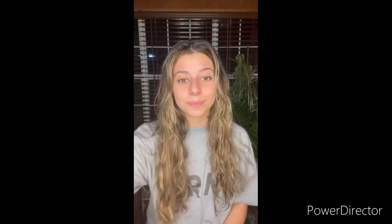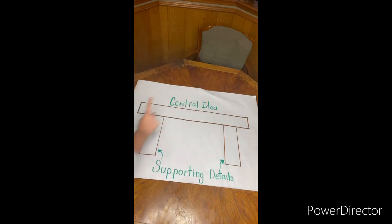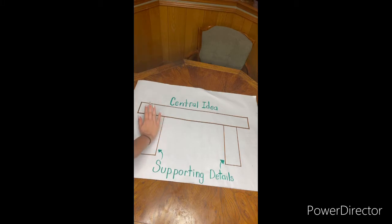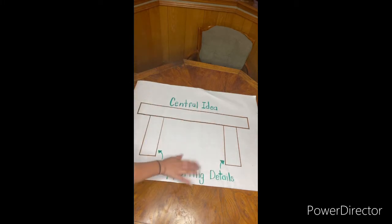Now let's look at this table that I've set up so we can put that information on the table. Right here at the tabletop is our central idea, and at the bottom the legs are our supporting details. Can this table stand if I take away this leg? No, it will not stand. So this is how we're going to visualize central idea and our supporting details.